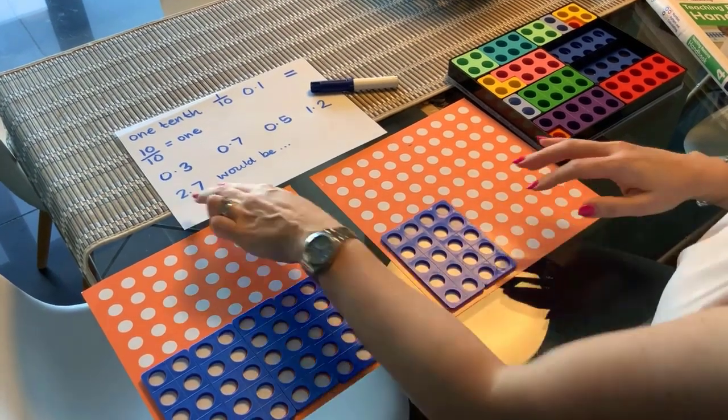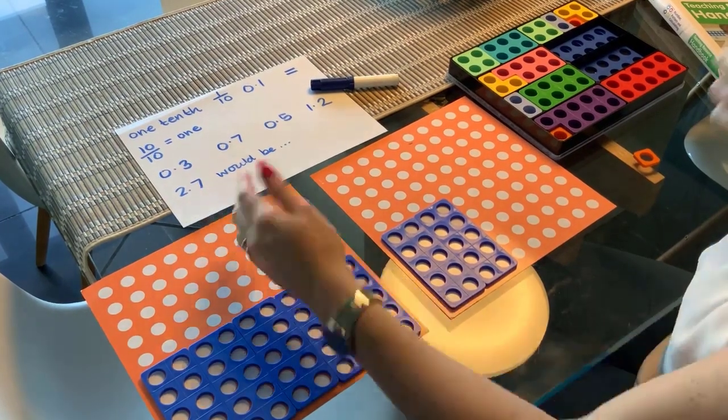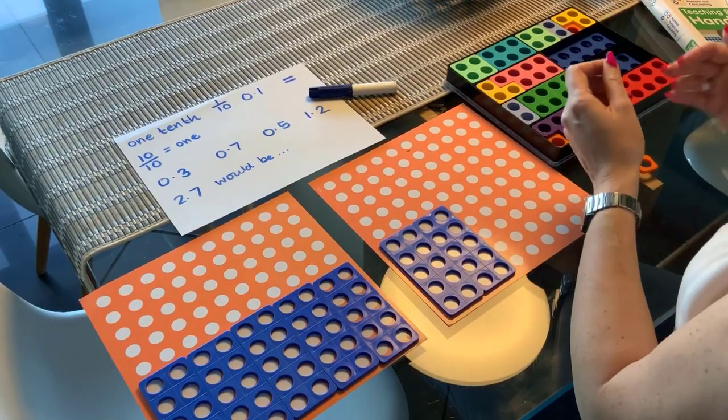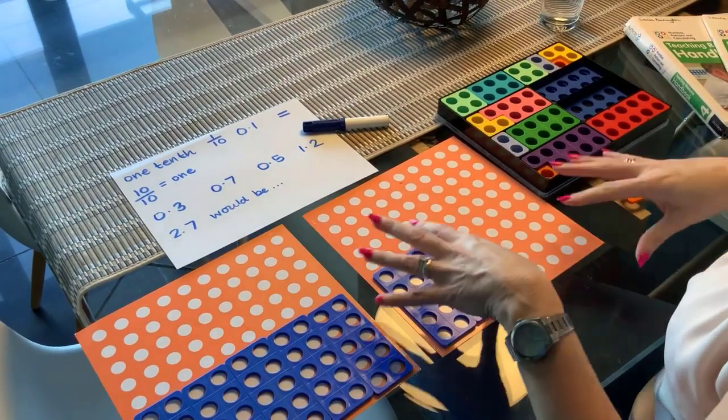And then how do we represent two point seven? So it would be two full baseboards and a third one set up with the point seven on. Nice activity to explore and talk about, really visual.